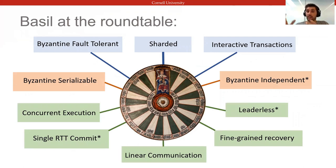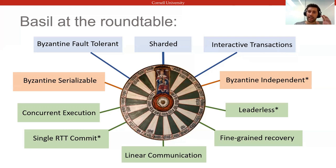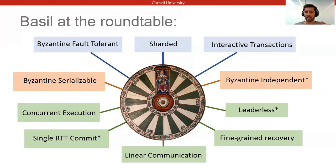On the performance side, Basel allows transactions to execute in parallel, then commit across shards in just a single round trip in most cases, with linear communication complexity. Basel does so without incurring the potential scalability or fairness bottleneck of a leader, and allows for independent failure handling for commutative transactions.